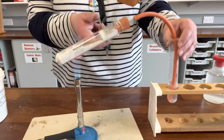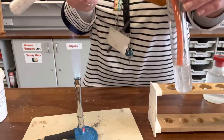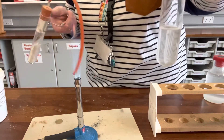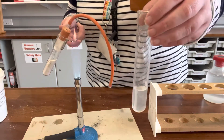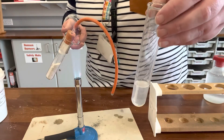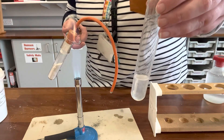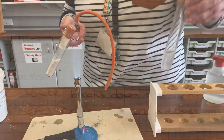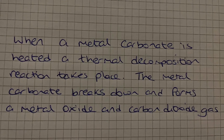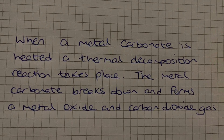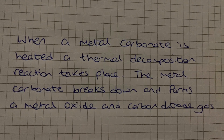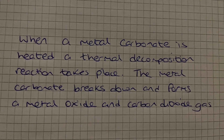You can notice on the screen that the lime water has turned cloudy, which proves that carbon dioxide is produced when calcium carbonate decomposes. To summarise: a metal carbonate will decompose when heated and will produce a metal oxide and carbon dioxide gas.